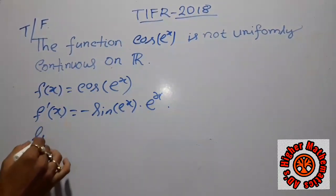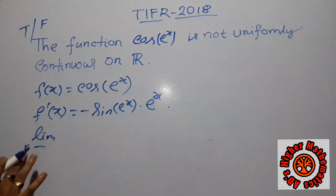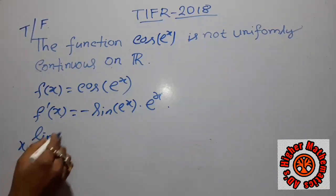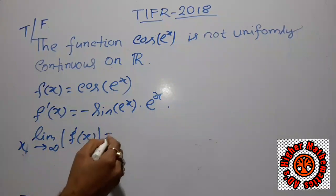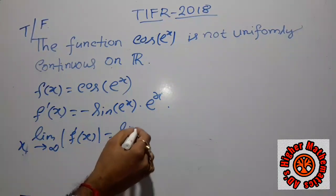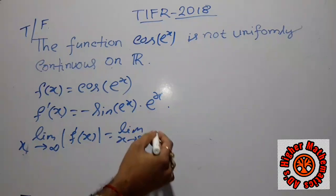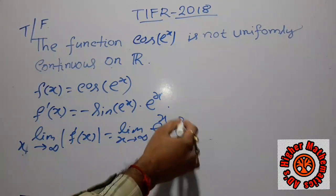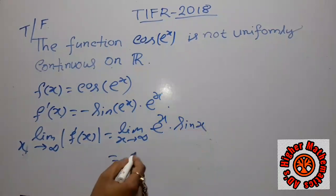Therefore, if we take the limit as x tends to infinity of |f'(x)|, this equals the limit as x tends to infinity of eˣ · |sin(eˣ)|, and this value is obviously infinity.